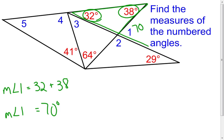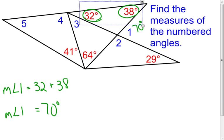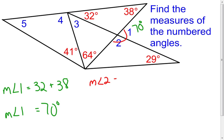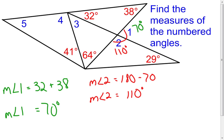Now that I know the measure of angle 1, the measure of angle 2 should be pretty fast because I know these two angles together are going to equal 180 degrees. To find the measure of angle 2, I need to take 180 degrees and subtract out the 70 degrees from the measure of angle 1. The measure of angle 2 is going to equal 110 degrees.